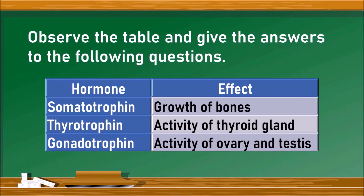Observe the table and give answers to the following questions. There is a table with hormone and its effects — these are hormones secreted in human beings: somatotrophin, thyrotrophin, and gonadotrophin. Somatotrophin helps for growth of the bones, thyrotrophin helps for the activity of the thyroid gland, and gonadotrophin is the hormone that activates the ovary and testes to release their hormones.